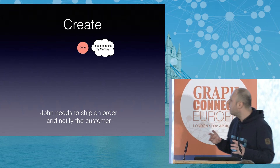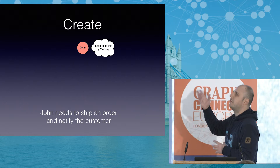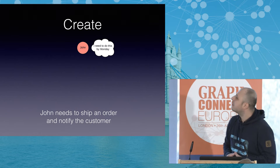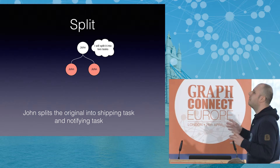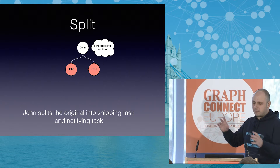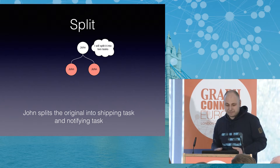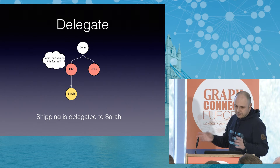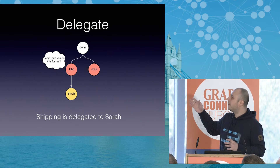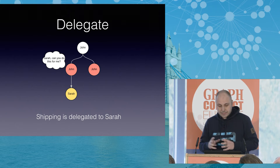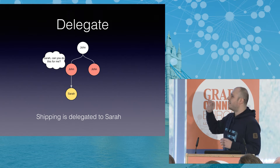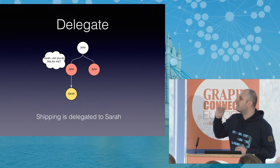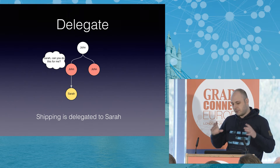In this example we have John. He needs to ship an order and notify the customer, and he needs to do it by Monday. This is the action of create task. So let's follow the recipe from before. First, John splits the task into two tasks — a shipping task and a notifying task, because this is a big task. He delegates the shipping part to Sarah. The notifying part will be completed by John himself. But note: in our system, Sarah has not yet agreed to the task — he was just asking her, 'Can you do this for me?' Sarah has not yet committed to the task.